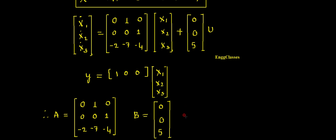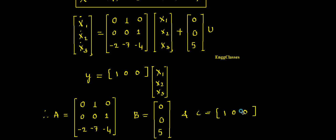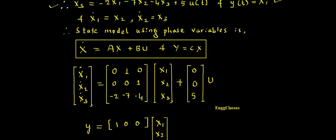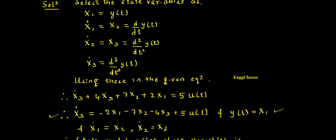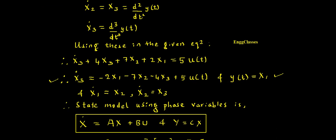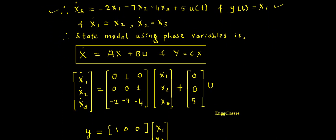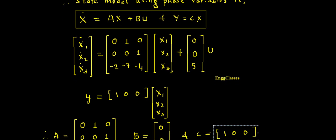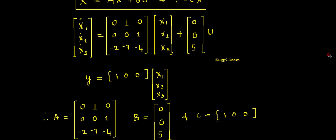And C is equal to [1, 0, 0]. So these are the final matrices. This is the numerical on state variable model constructed using phase variables for the given differential equation. I have explained this step by step. I hope you have understood. If there are still any doubts, please let me know in the comment section — I'm happy to answer. Thank you so much for watching.